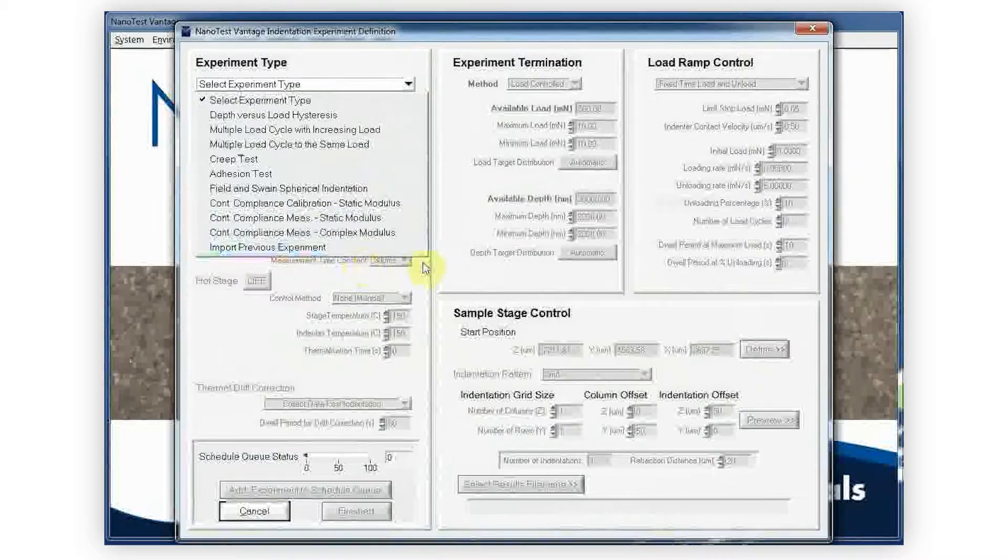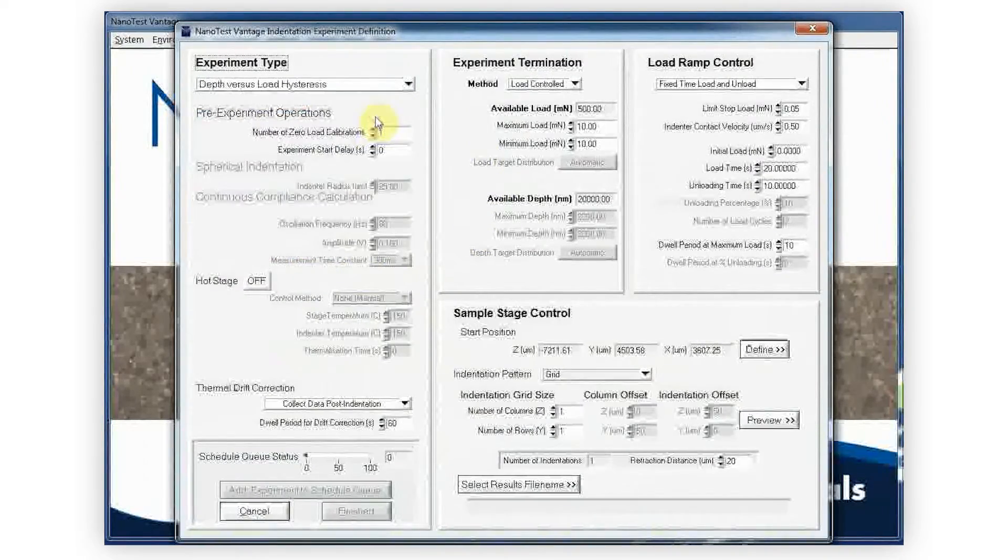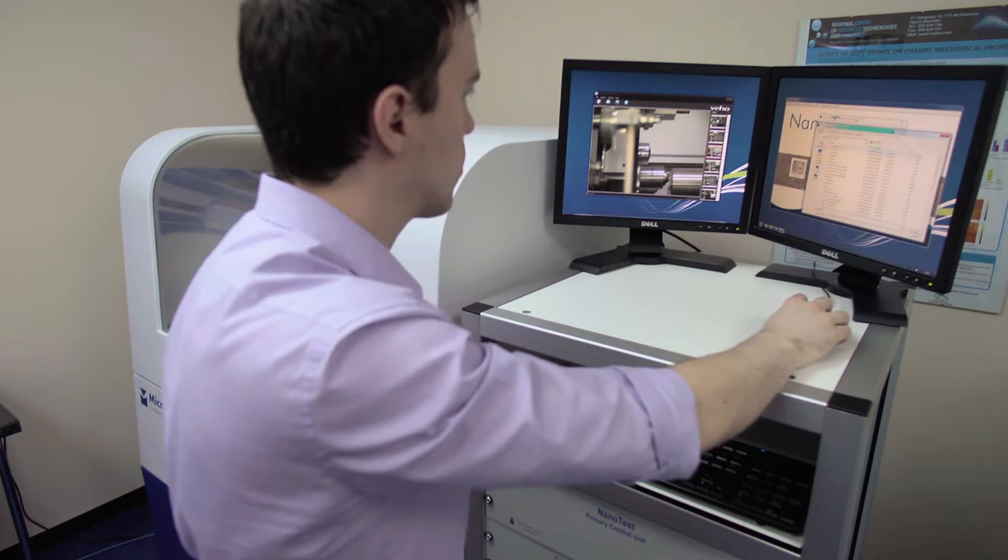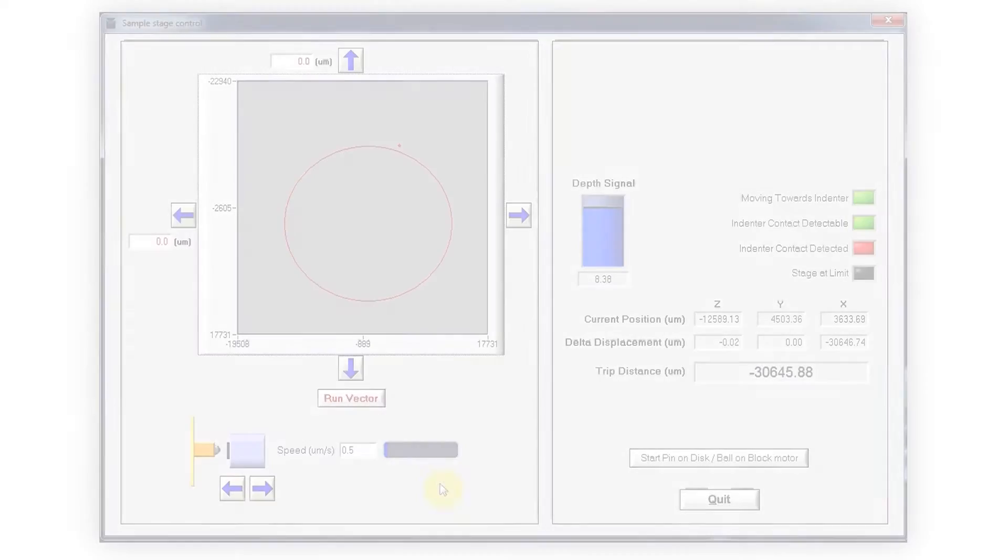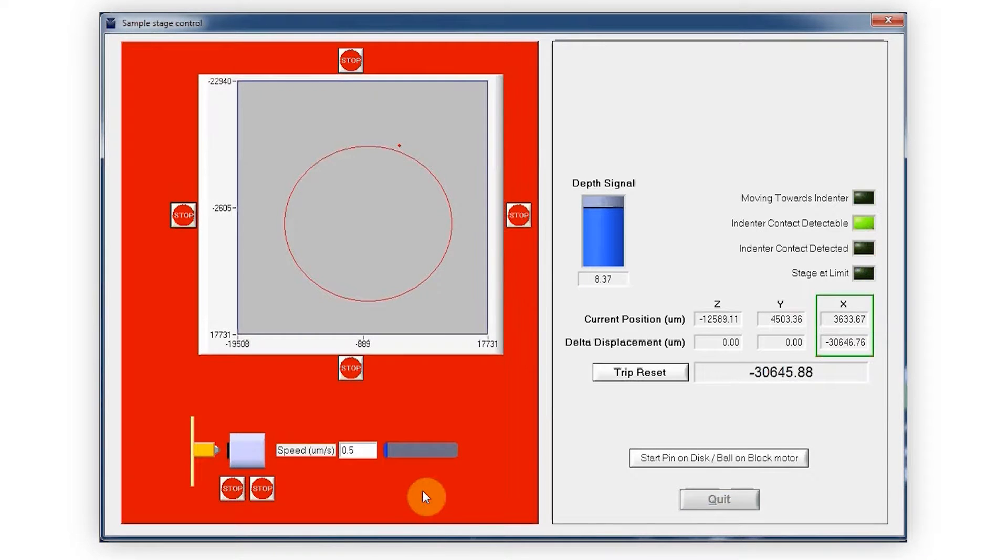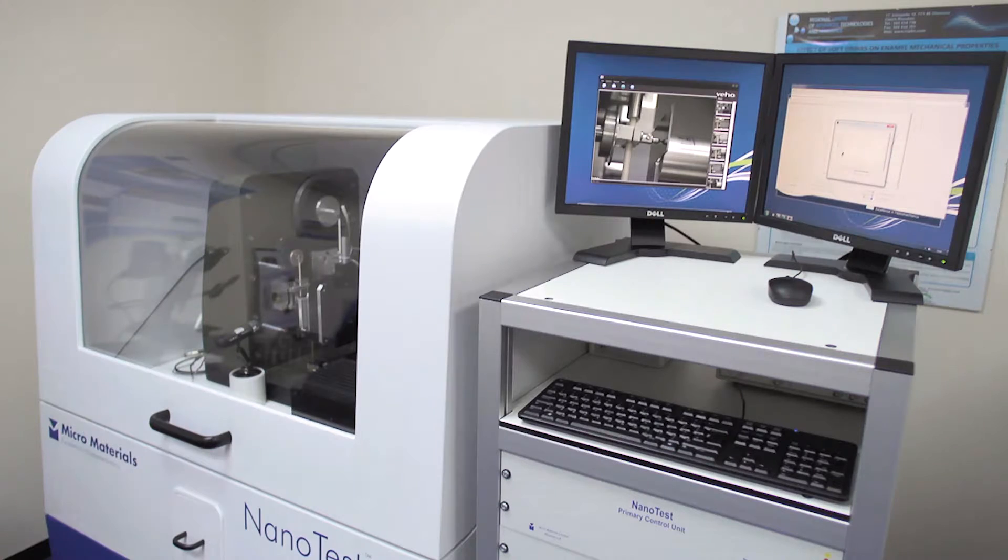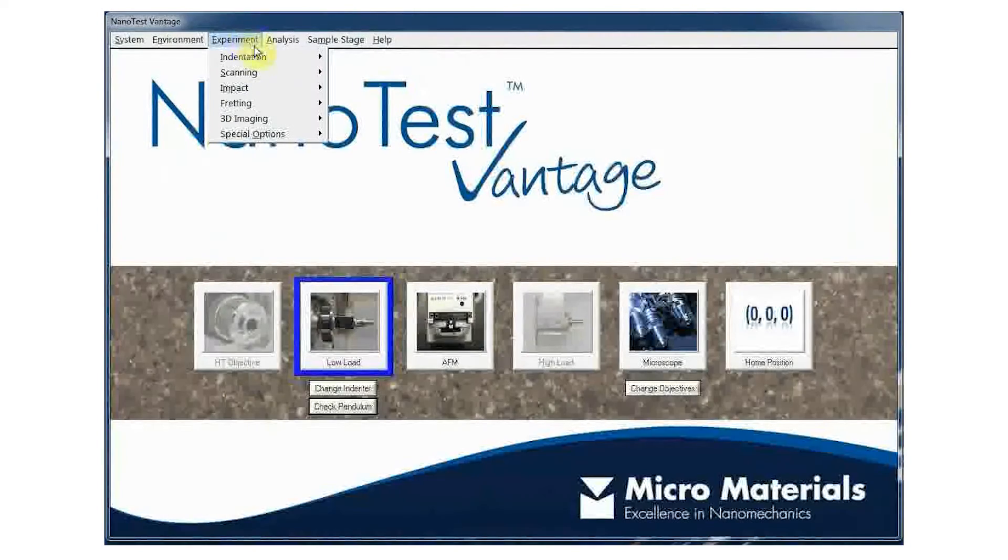Improvements brought by the NanoTest Vantage have focused on four key areas: improved ease of use, increased speed of setup, calibration and training, improved system performance and system robustness. Multiple samples can be tested simultaneously, and the software scheduling system allows the instrument to run 24-7 without user intervention.